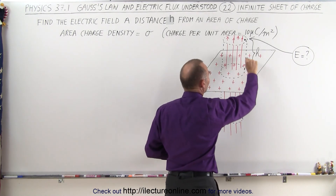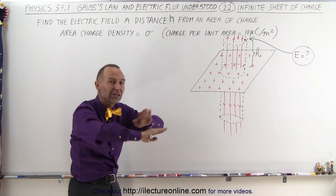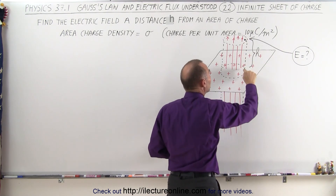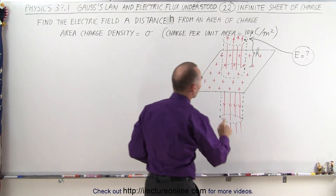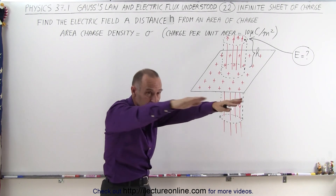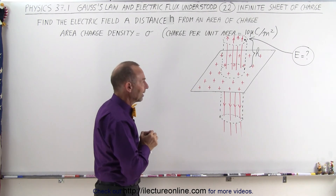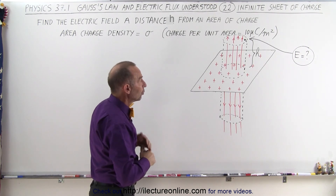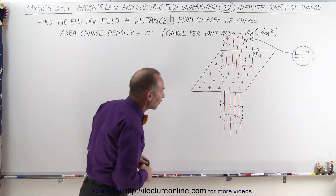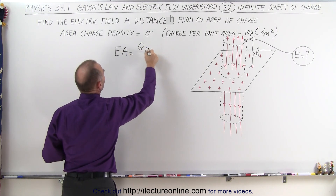We want to find the electric field at some distance h above that infinite sheet. We need to make some assumptions: we assume the sheet is very large such that the distance h above the sheet is small relative to the overall size of the sheet. We only show a small section of it, but we assume it extends far enough that from height h you see a sheet of charge all the way around you.